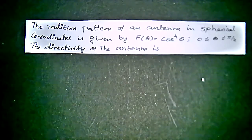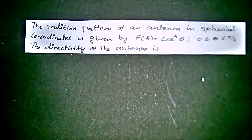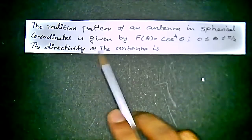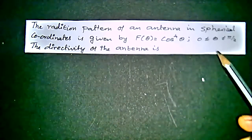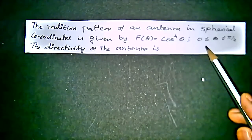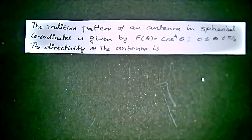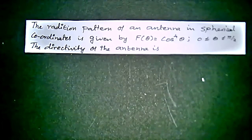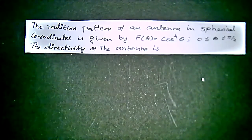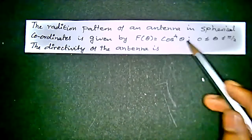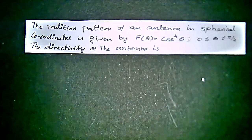Now we are going to see a problem in antenna and wave propagation. The problem given to us is: the radiation pattern of an antenna in spherical coordinates is given by f(θ) = cos⁴θ, where θ is greater than or equal to 0 and less than or equal to π/2. The question asked is to find the directivity of the antenna from the given term f(θ) = cos⁴θ.